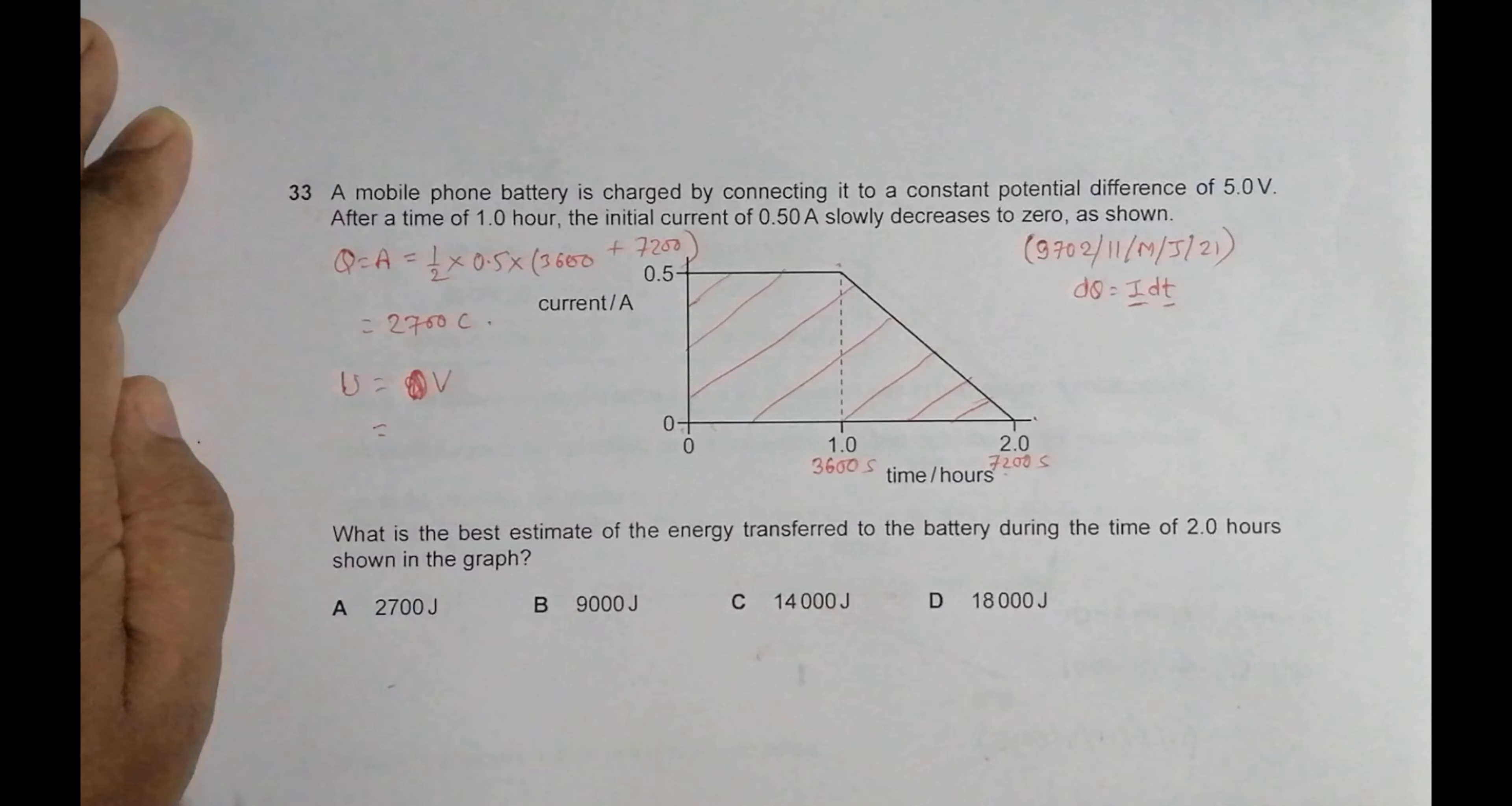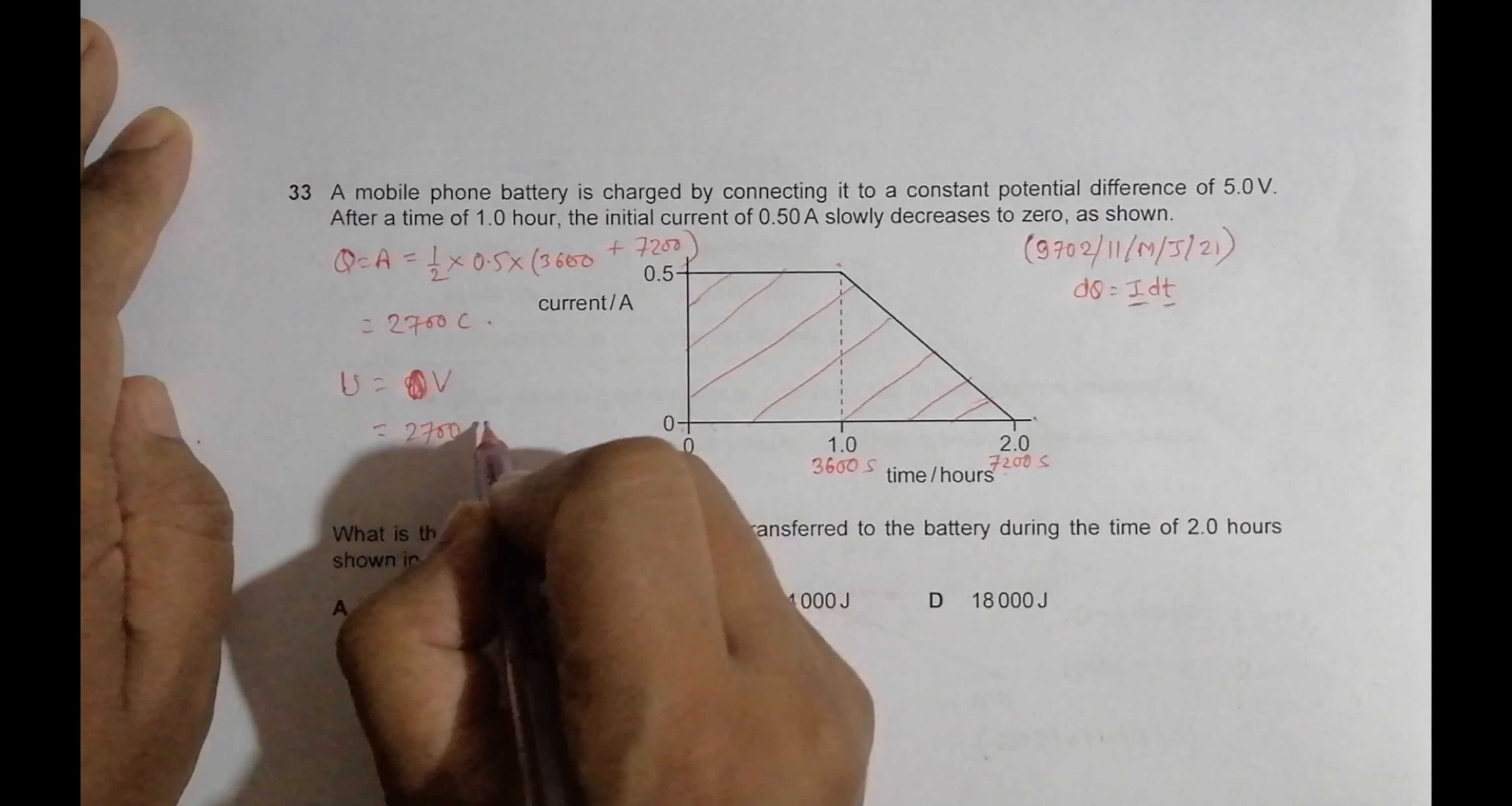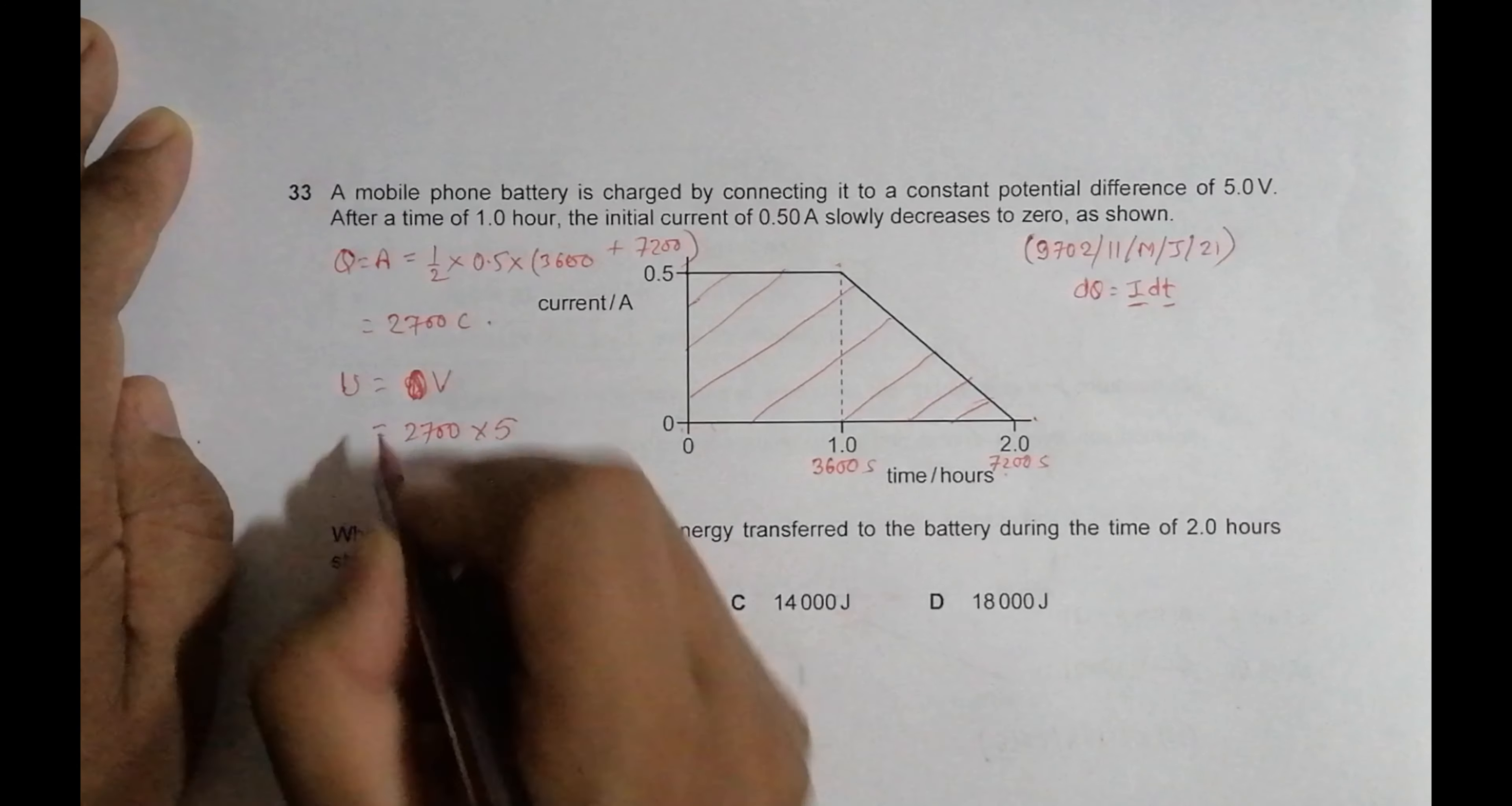So it equals 2700 times 5, which equals 13,500 joules. Now the answer closest to this is 14,000.